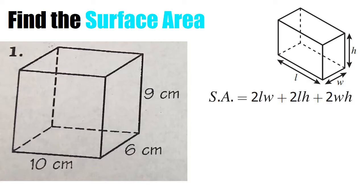First, let's label our parts. So we know that nine is going to be my height. I'm going to find my length, which is equal to 10 centimeters. And then my width is going to be 6 centimeters.